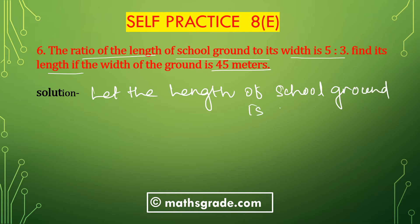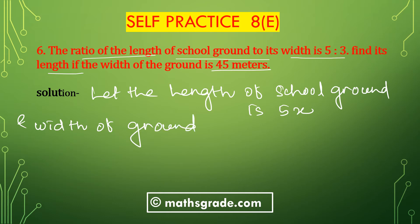Since the ratio is 5:3, we let the length of the school ground be 5x and the width of the school ground be 3x. Now we have to find the length, given that the width is 45 metres.